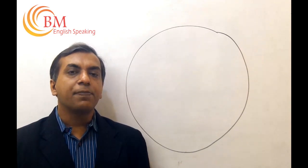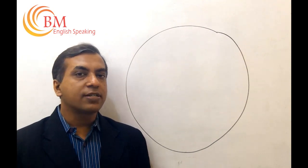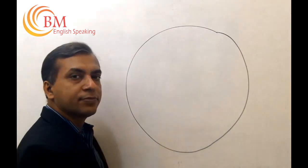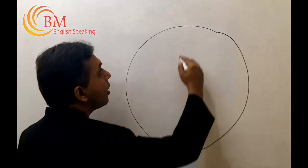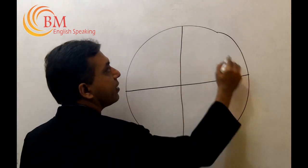Now take a piece of paper and pen and draw a circle like this. Then divide this circle into eight parts like this.